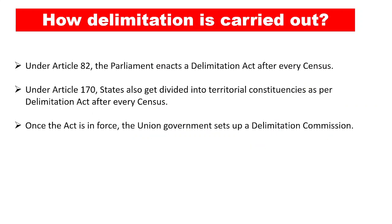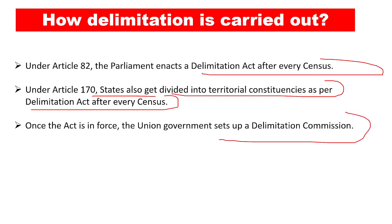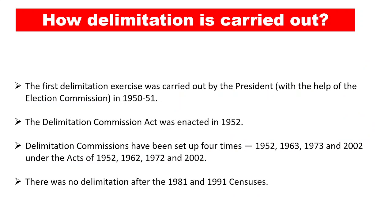How is delimitation carried out? Under Article 82, the Parliament enacts a Delimitation Act after every census. Under Article 170, states also get divided into territorial constituencies as per the Delimitation Act after every census. Once the act is in force, the union government sets up the delimitation commission, which is formed under the Delimitation Act. When the Delimitation Act comes into force, the delimitation commission is formed.